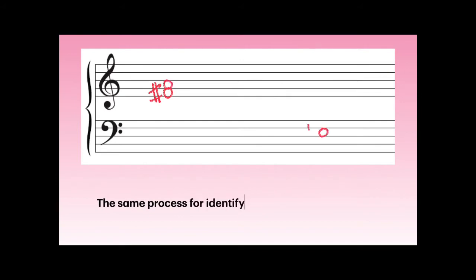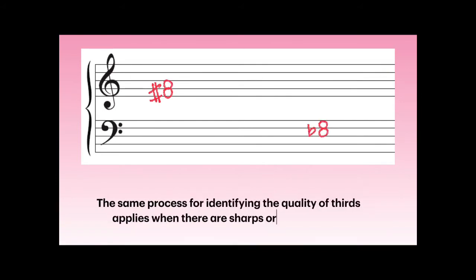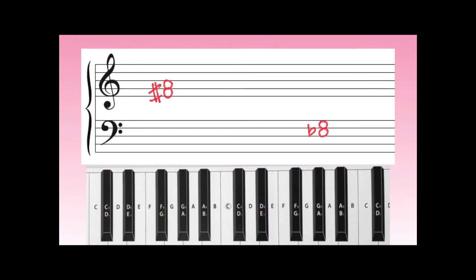The same process for identifying the quality of thirds applies when there are sharps or flats present. Let's use our keyboard to calculate how many half-steps there are in these intervals. Starting on an F-sharp: one, two, three half-steps up to an A — this is a minor third.